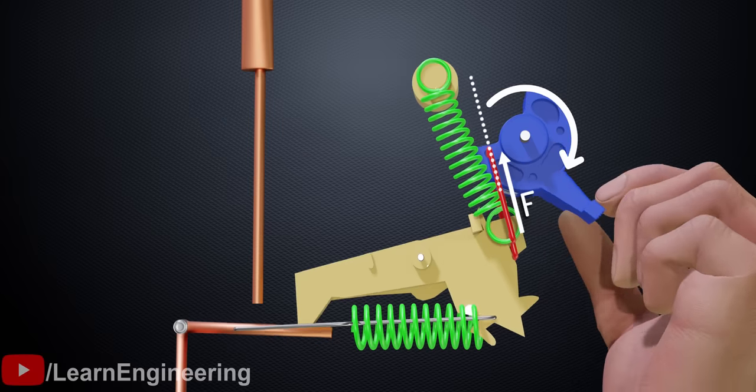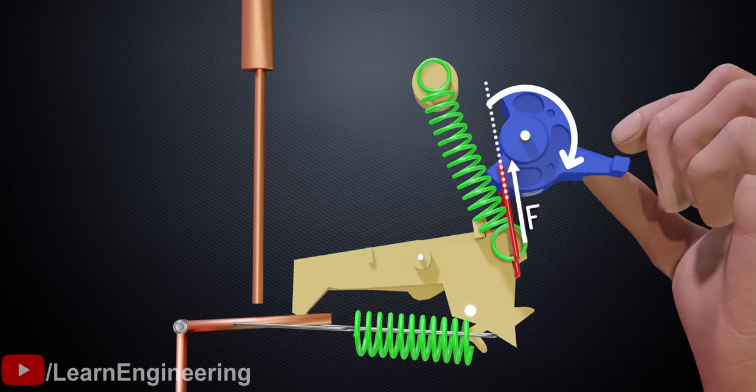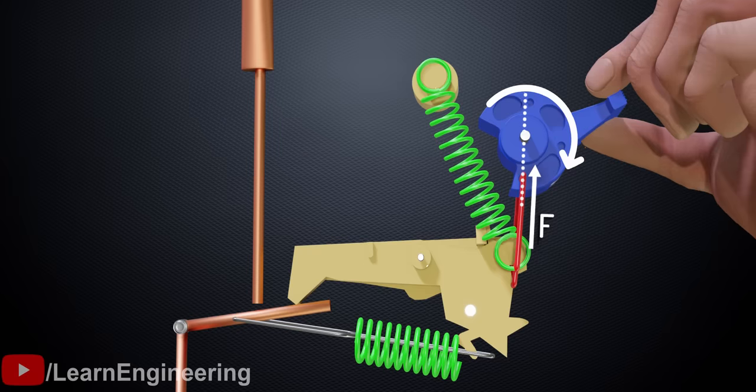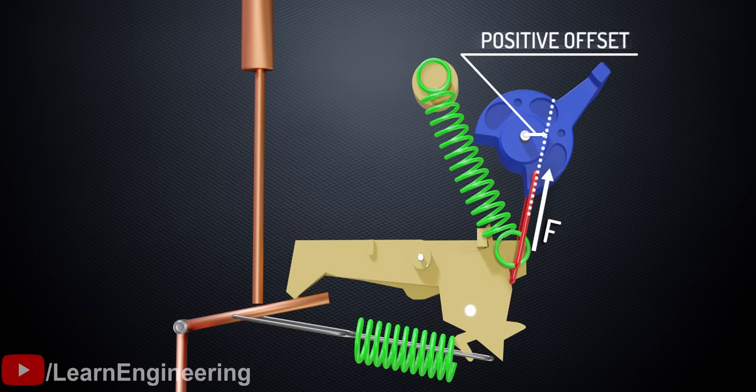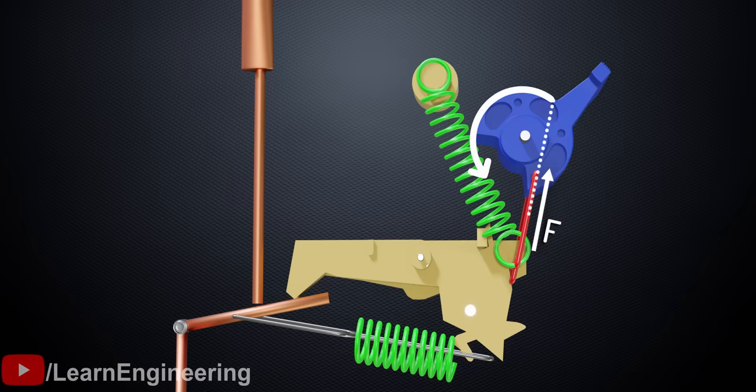However, if you push the lever farther up, do you notice anything peculiar about the offset distance? It suddenly becomes positive, which means that after a critical limit, the torque will act on it in a counterclockwise direction.